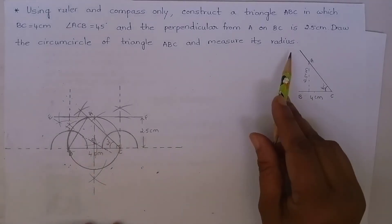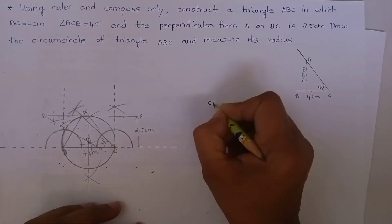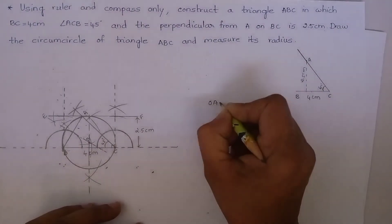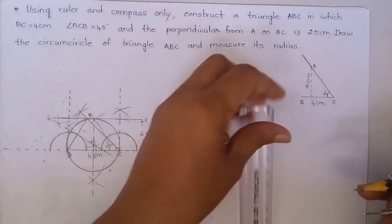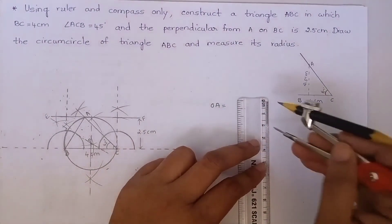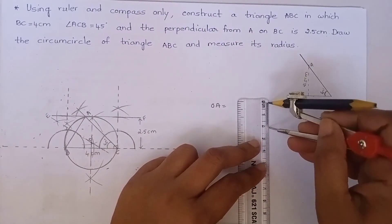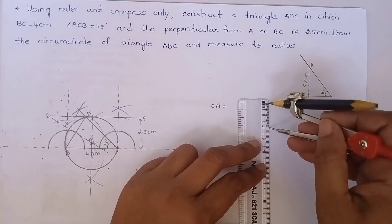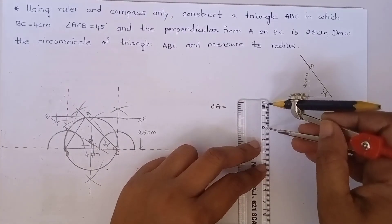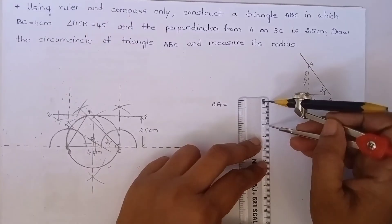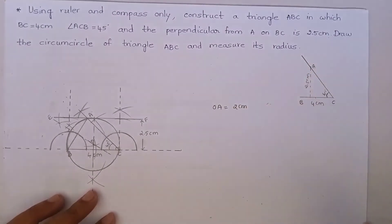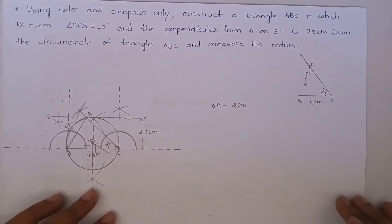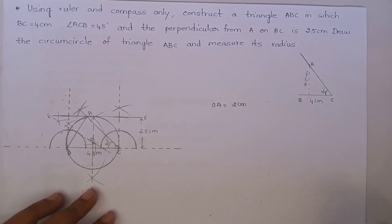Measure the radius. OA is 2 centimeters. Hope you have understood. Thank you.